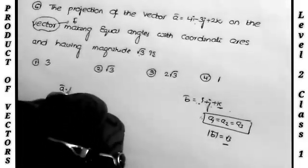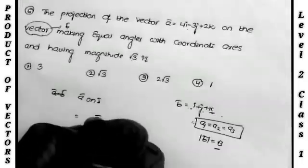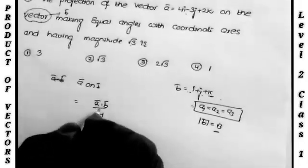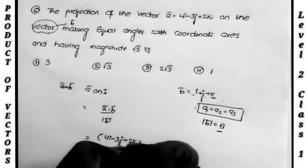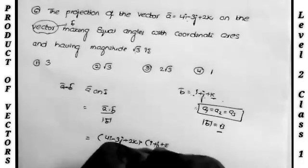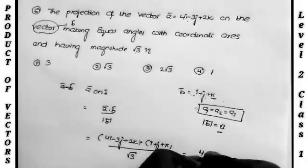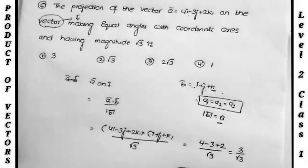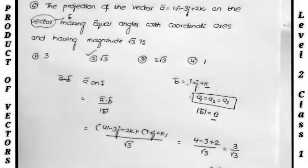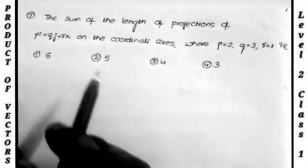Projection of ā on b̄ = a·b / |b|. a·b = (4i − 3j + 2k)·(i + j + k) = 4 − 3 + 2 = 3. |b| = √3. Projection = 3/√3 = √3, which is the second option. The key step is identifying b̄ = i + j + k before computing.